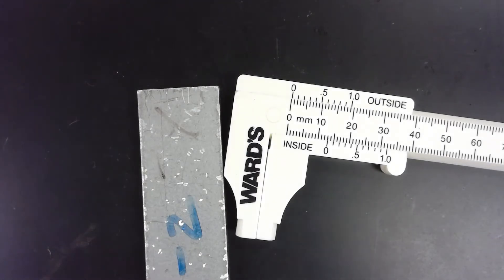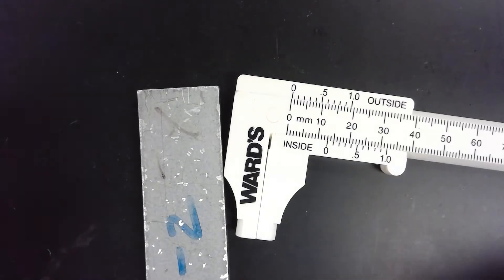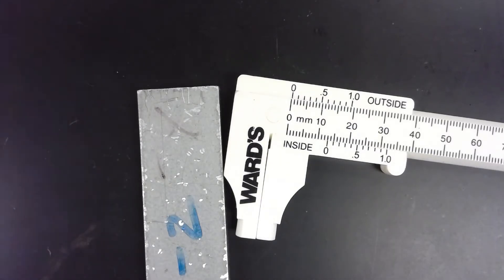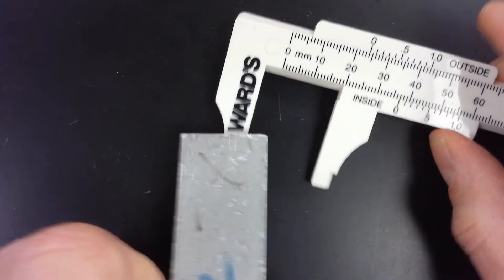Here we're going to show you how to use this Ward's caliper that we use in physical science and physics class in order to make more precise measurements. Now we'll use this slab as an example.